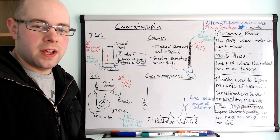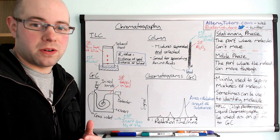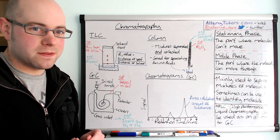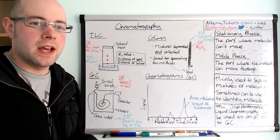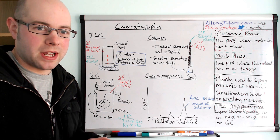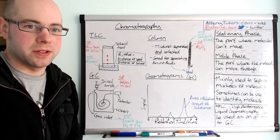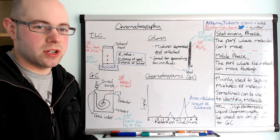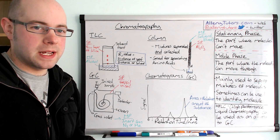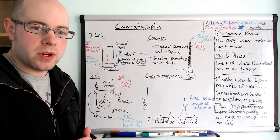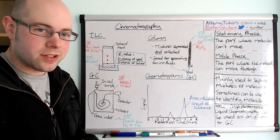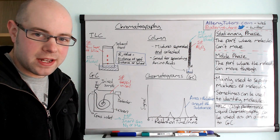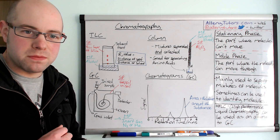So we're going to start with effectively what chromatography is. Chromatography is basically a technique that's mainly used to separate chemicals out, like a mixture of different chemicals. Sometimes it can be used to detect certain chemicals as well, and we'll go through that in a minute. But there are two key words that you really need to know for chromatography: stationary phase and mobile phase.